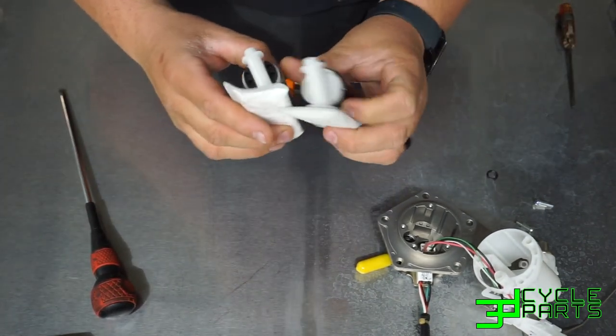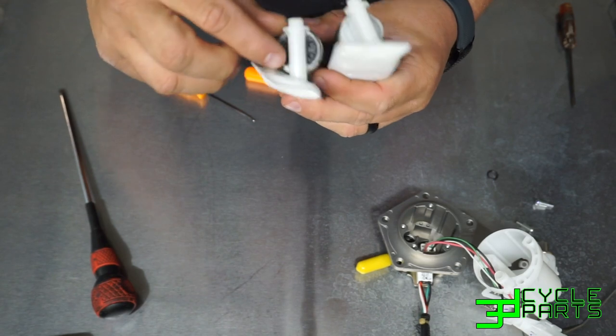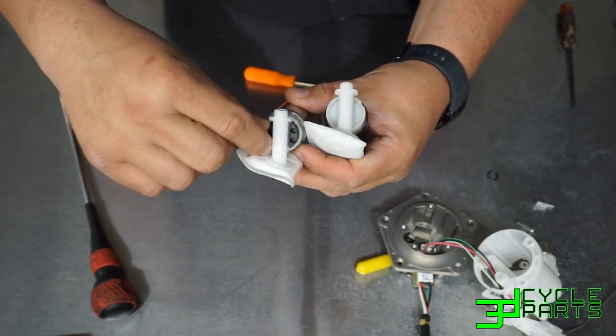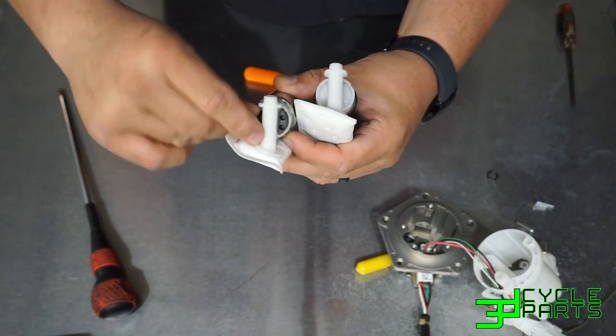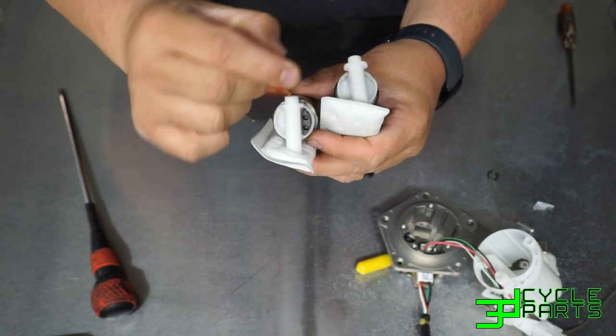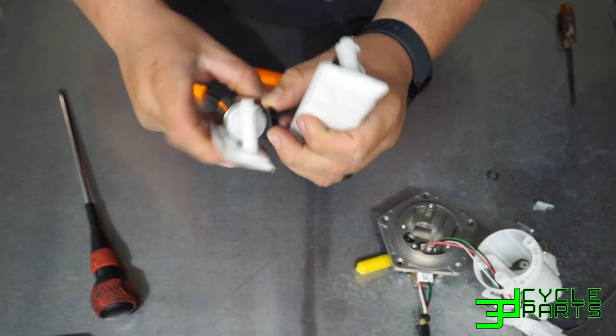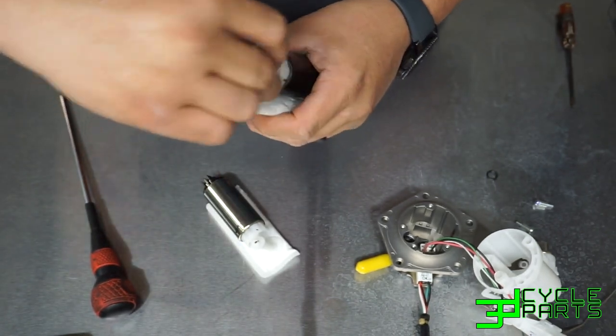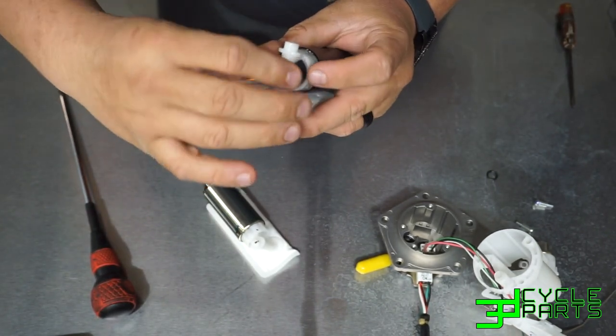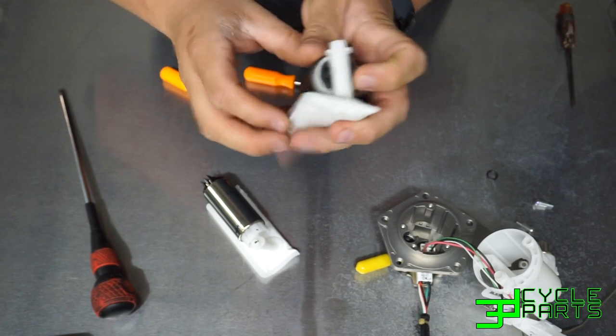The last thing we need off of the old pump are these little rubber spacers. They're in the bottom of the strainer. Just pull those out of there and put them right back in the new strainer just like that.